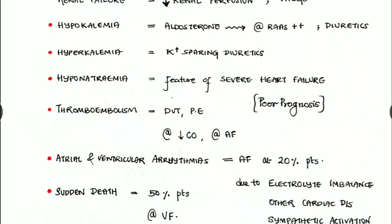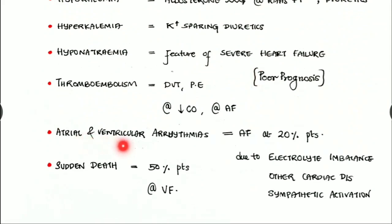Thromboembolism can be a complication — there can be DVT (deep vein thrombosis) or pulmonary embolism, due to reduced cardiac output or atrial fibrillation. Atrial and ventricular arrhythmias such as atrial fibrillation are seen in around 20% of patients, due to electrolyte imbalance, comorbid heart diseases, or sympathetic activation. Sudden death can also occur.